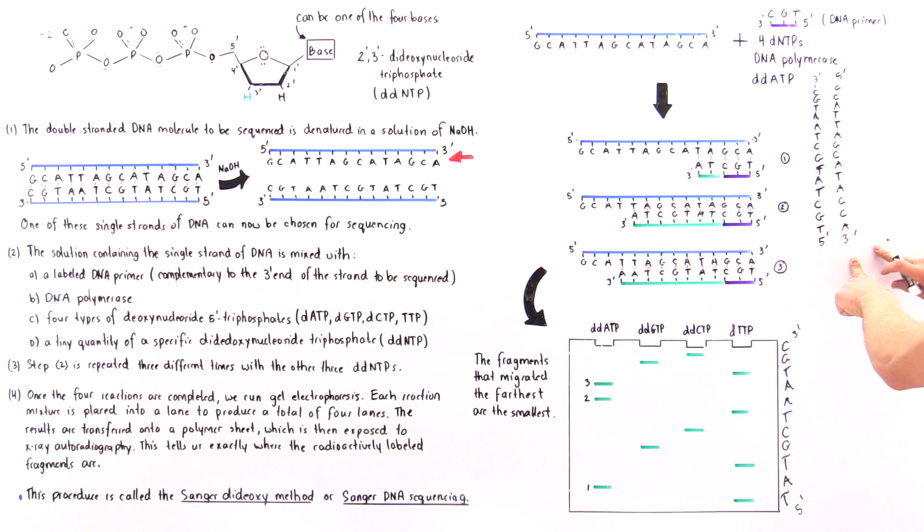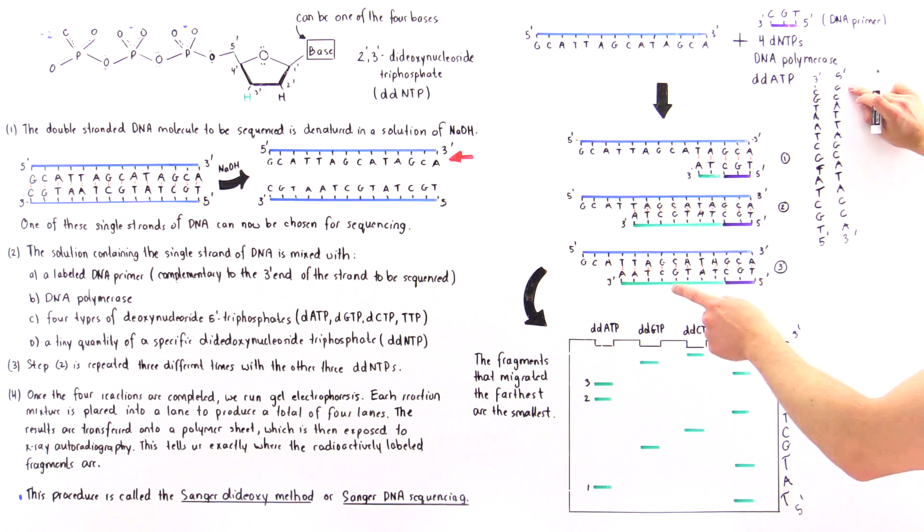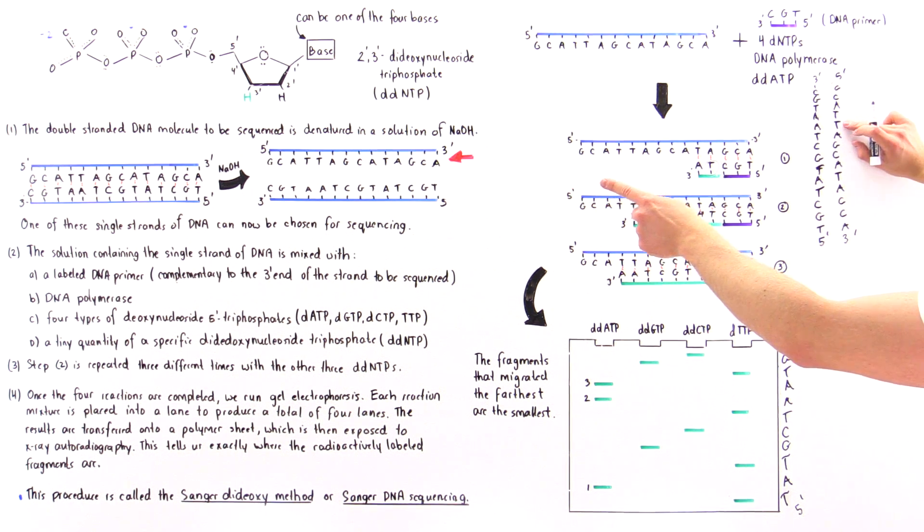And so we see that this is exactly what the sequence of this molecule was. So we have G, C, A, T, T, C, A, T, A, then we have G, C, and A.